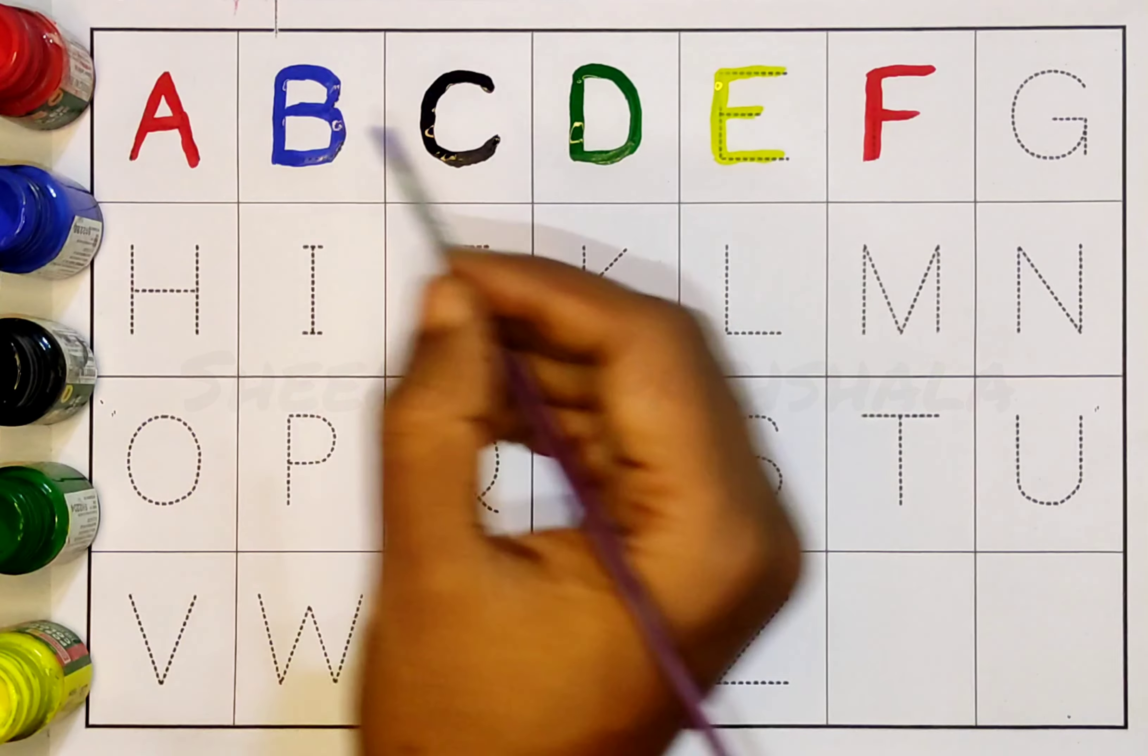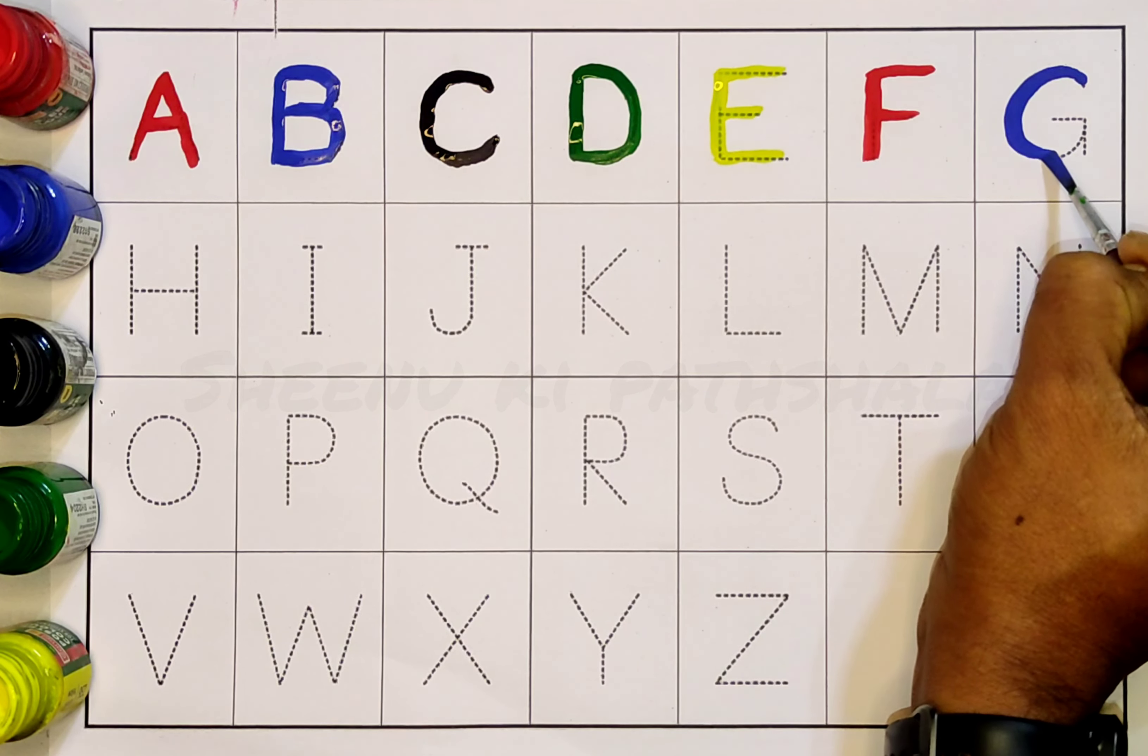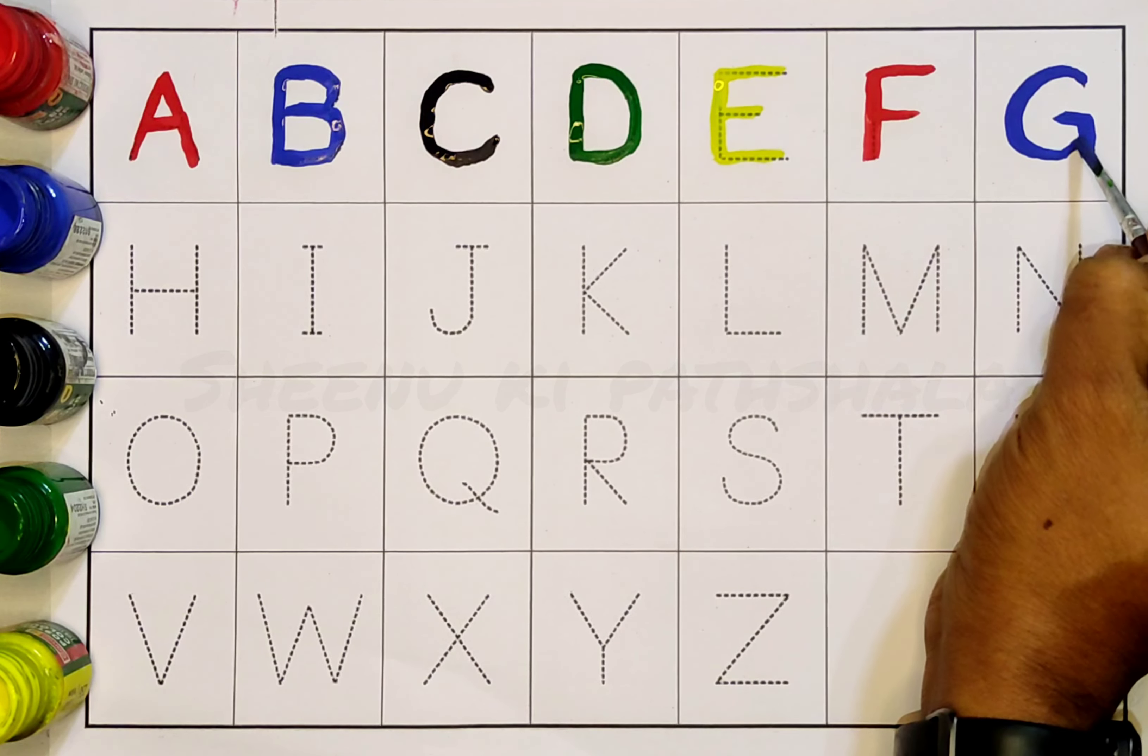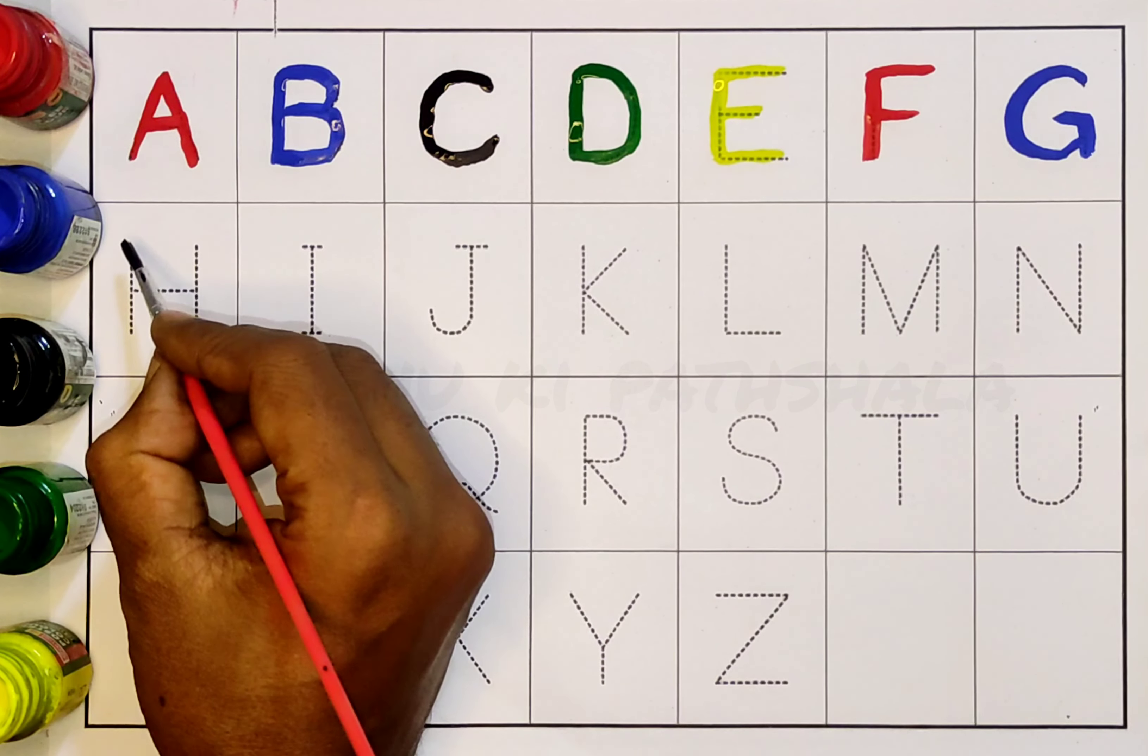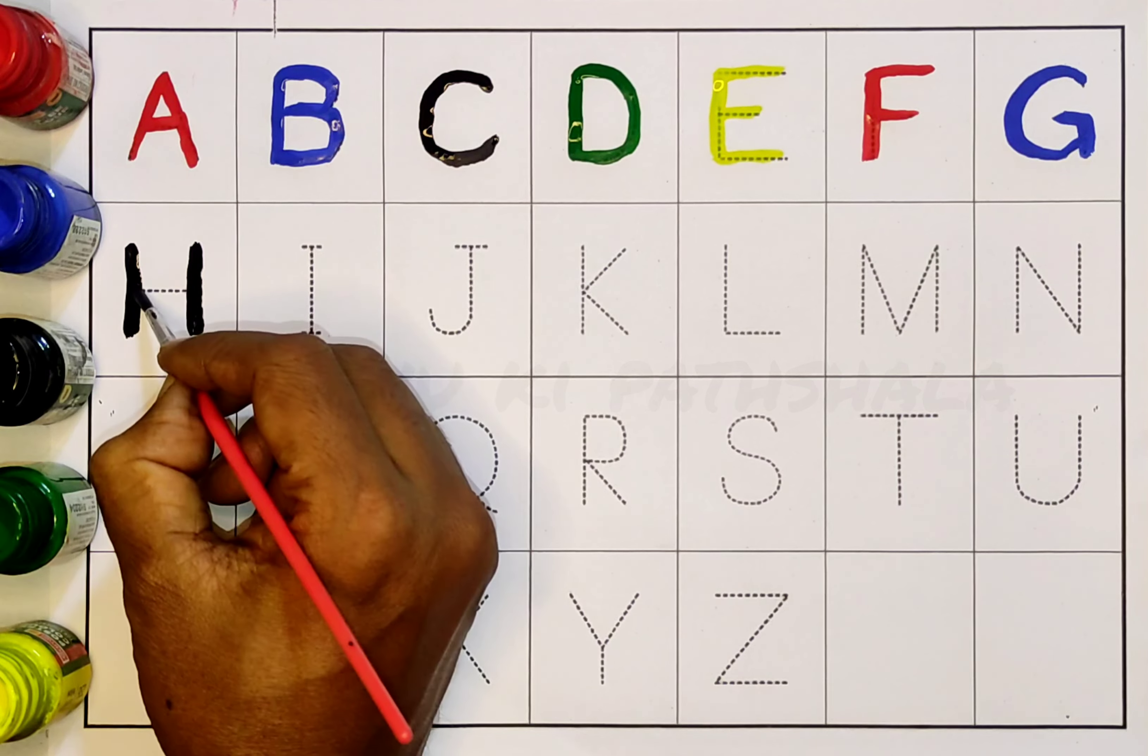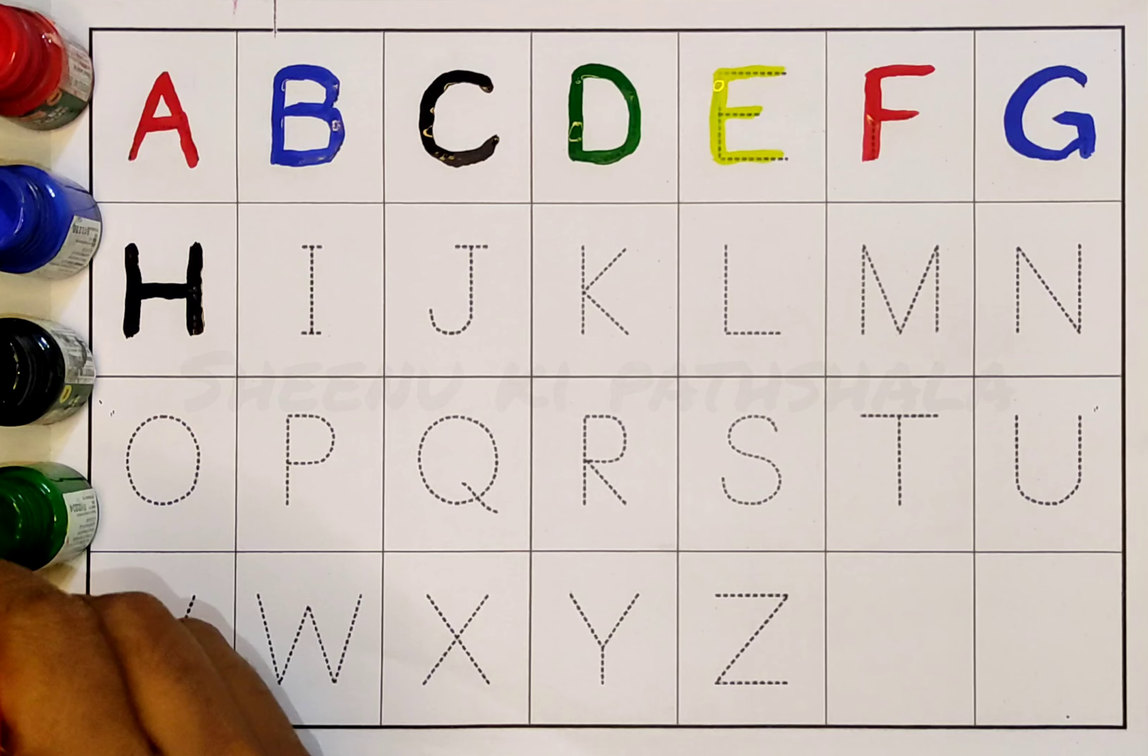Blue color, G G for girl. Black color, H H for hen. Green color.